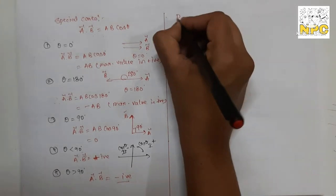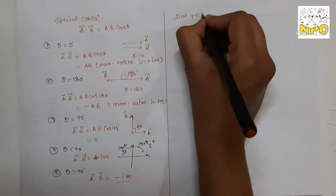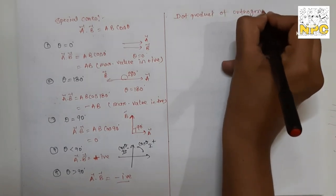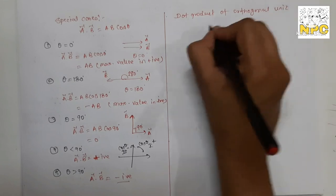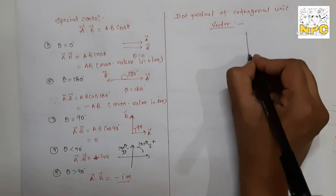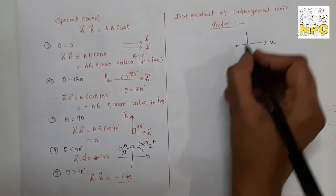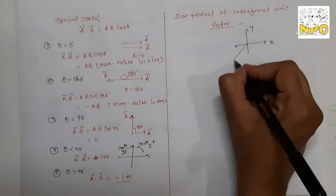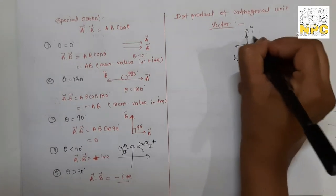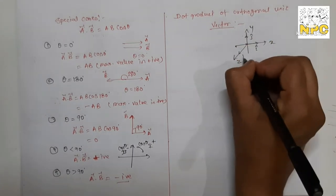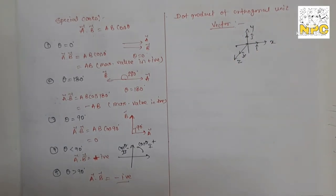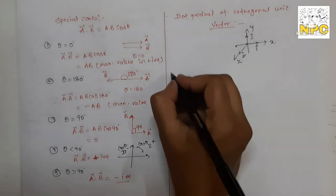Now we will see the dot product of orthogonal unit vectors. We have studied unit vectors — along the x-axis the unit vector is i-hat, along the y-axis it is j-hat, and along the z-axis it is k-hat. These three unit vectors are mutually perpendicular to each other.